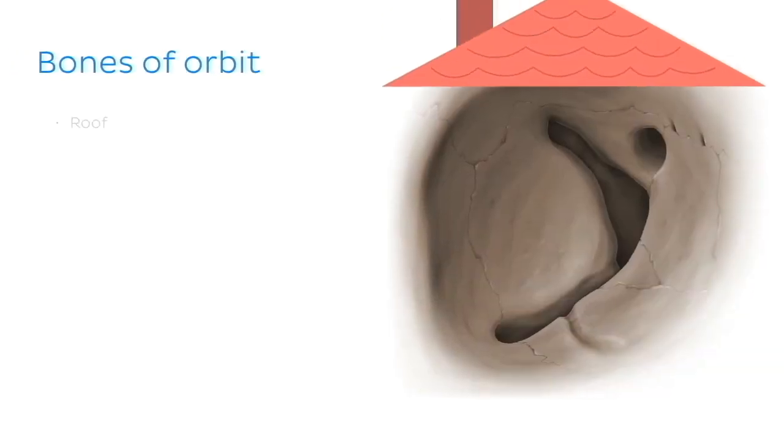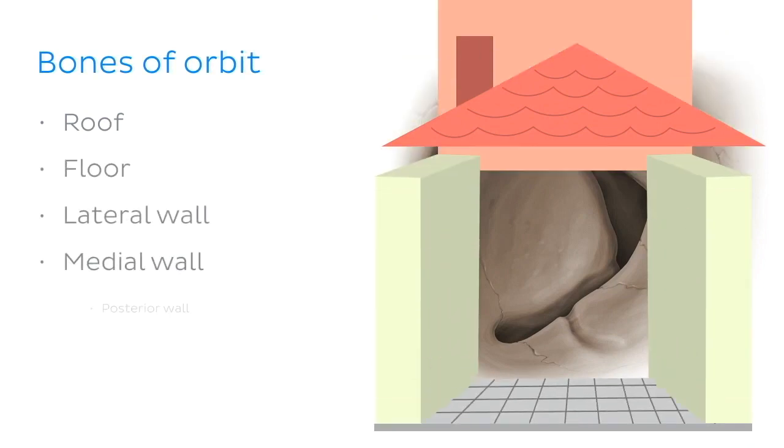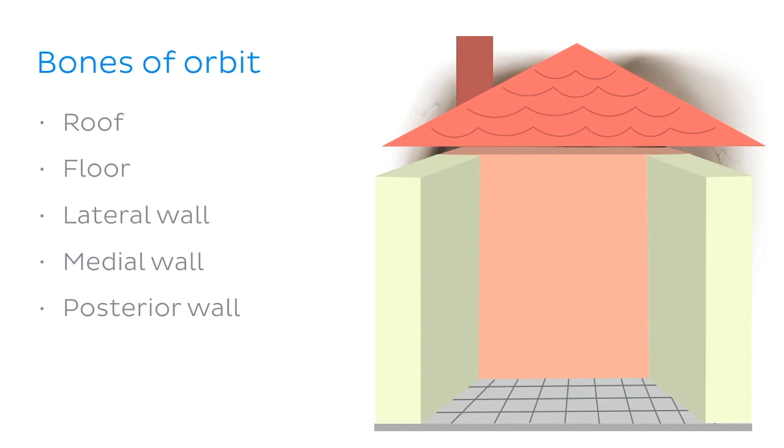The orbit has a roof, a floor, a lateral wall, a medial wall and a posterior wall. Let's quickly remind ourselves which bones form these structures.